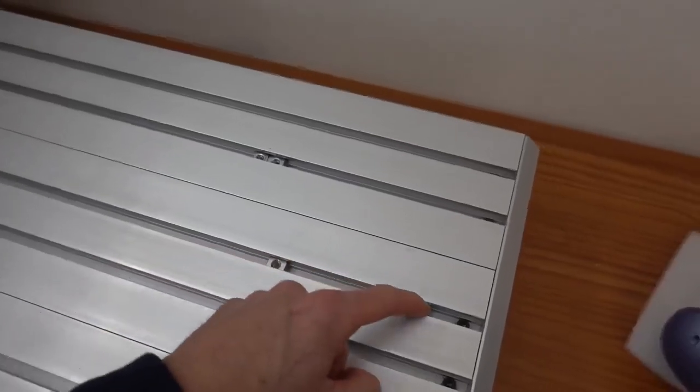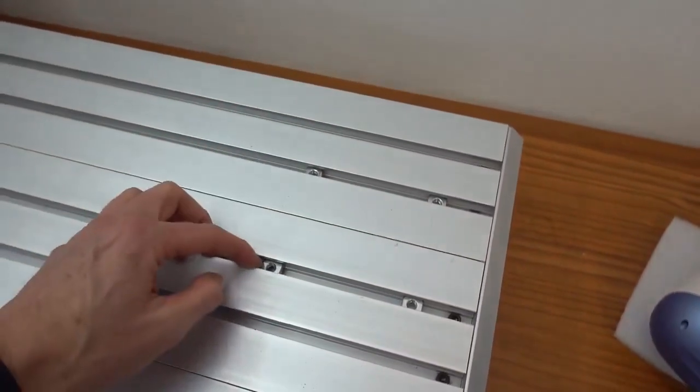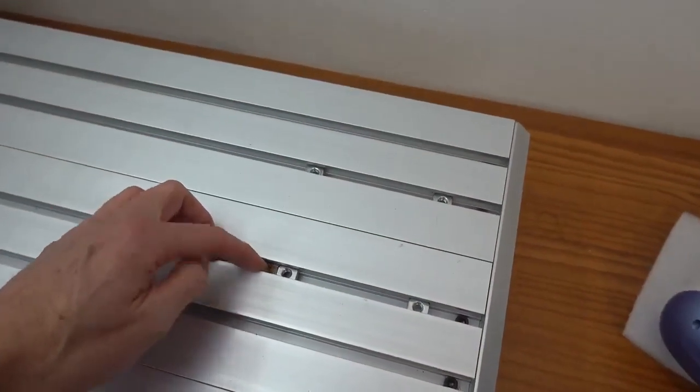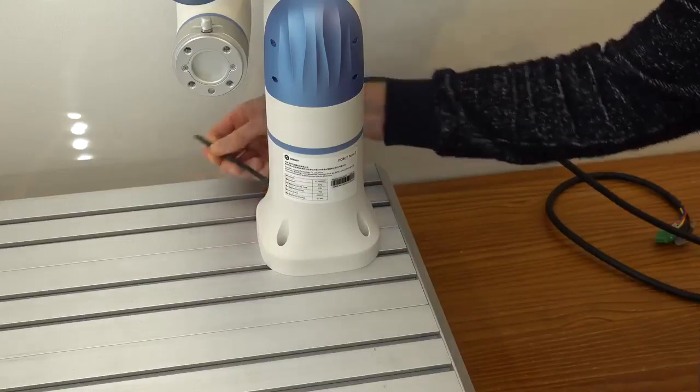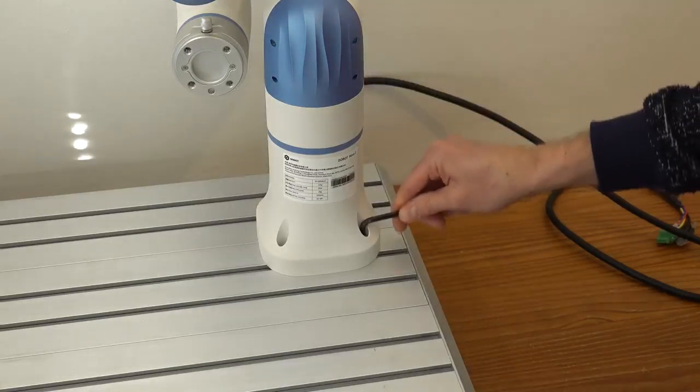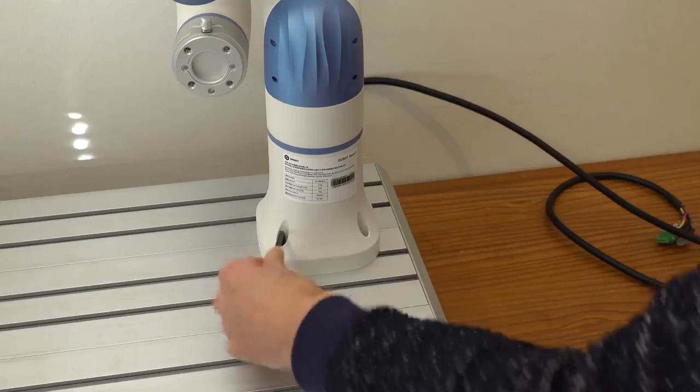Since the arm is quite heavy it needs to be bolted down to a sturdy work surface. Since I did not feel like drilling four holes in my workbench I decided to mount it to the table of my CNC router, which happens to have the right spacing between the slots in the machine bed. I will not be using the CNC for the rest of the video, this is just acting as a mounting surface here.